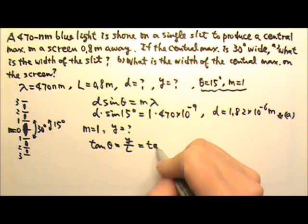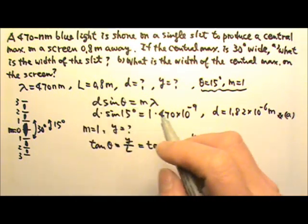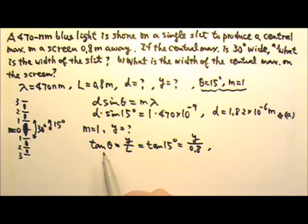So I have to use tan 15 degrees equals to Y over L, which is 0.8. On the AP exam, if you use sine theta for big angle, you will lose points. So in this case, for 15 degrees, we need to make sure that we use tan theta.